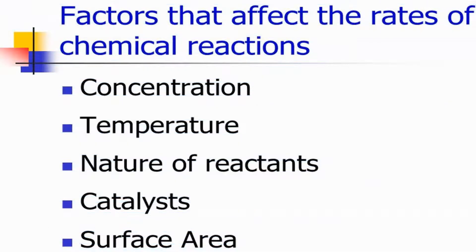We know that the rate of different reactions is different. That means various reactions need different time durations for completion. But the same reaction occurs at different rates on changing the conditions. So let us discuss some factors that affect the rate of a chemical reaction.